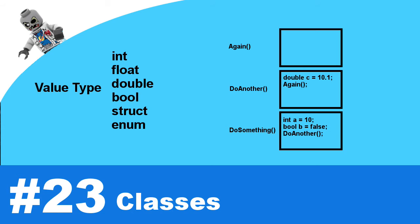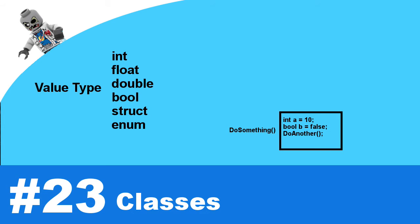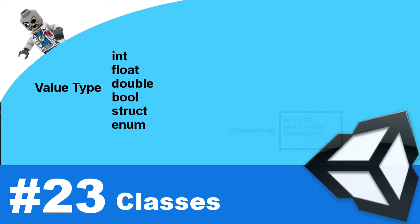At some point we're going to stop calling methods and run through them — you simply get to the end of the method and return to the calling method. What happens is the frames are popped off the stack and all those variables we had defined are now reclaimed memory. Eventually it keeps popping frames off the stack until we're back to where we started, or the program ends. That's why we haven't needed to worry about memory management.